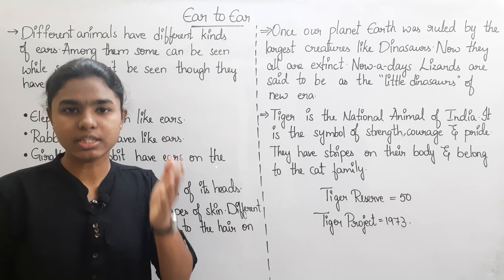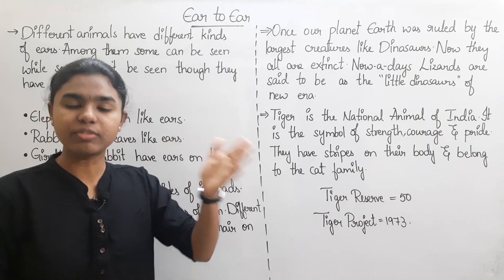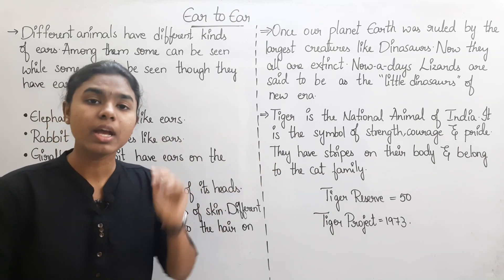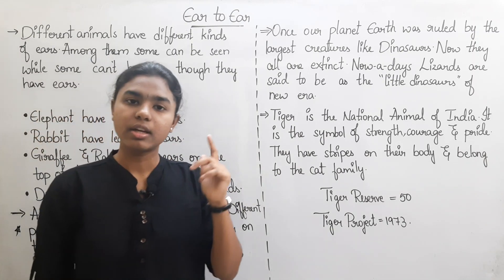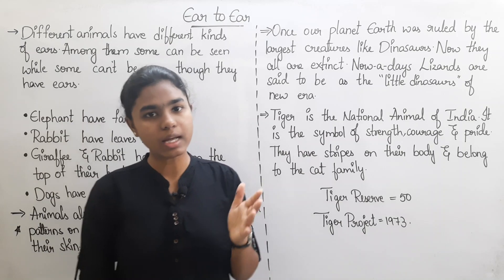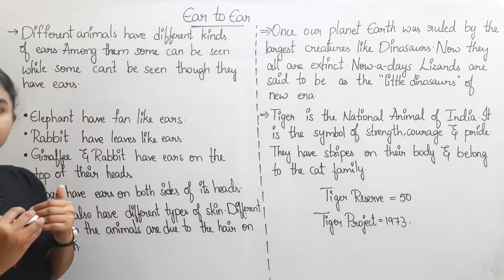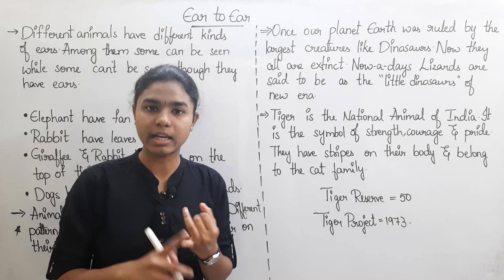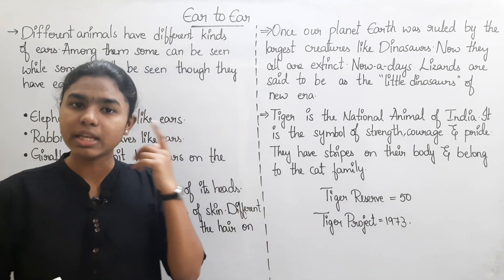Tigers have different types of ears, chimpanzees have different types of ears. We can find a few more animals with different ears. For example, crocodiles, birds, lizards, etc. — we can find the same type of ears among these animals.